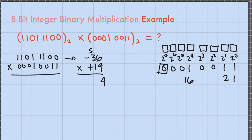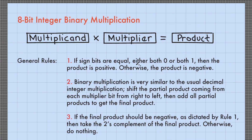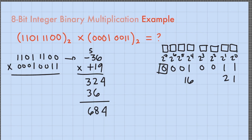If we multiply these decimal numbers: negative 36 times 19. Checking the sign bits — the multiplicand has a sign bit of 1 and the multiplier has a sign bit of 0. Since the sign bits are not equal, their product must be negative. Let's now perform binary multiplication on these binary numbers.